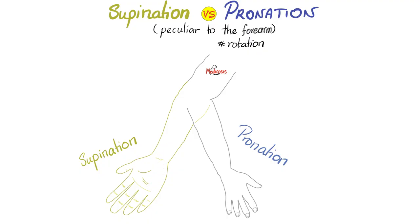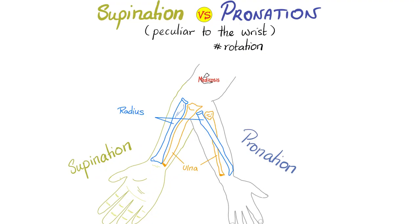The technical definition: you have two bones in the forearm — radius, the lateral bone, and ulna, the medial bone. Supination is when the radius lies parallel with the ulna and the palm is facing forward. Pronation is when the radius crosses in front of the ulna, anterior to the ulna, and the dorsum or back of your hand faces forwards.